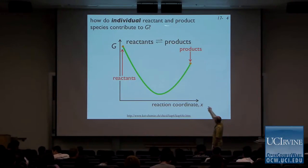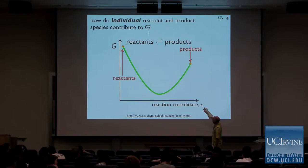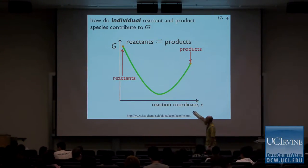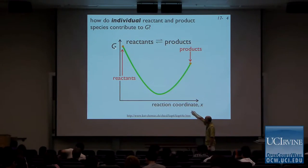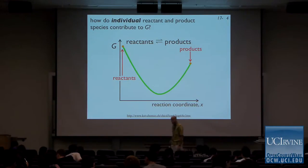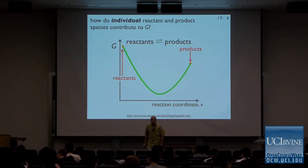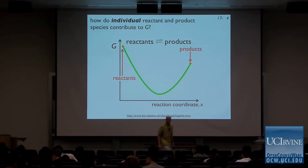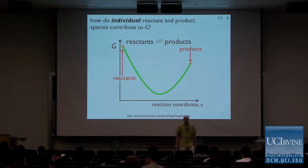How do individual reactants and products contribute to G? There could be a whole slew of reactants and a whole slew of products. How do we attribute the G for a reaction to individual reactants and products? As chemists, this is obviously an important thing for us.